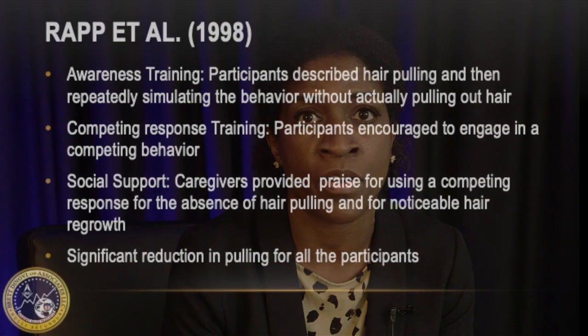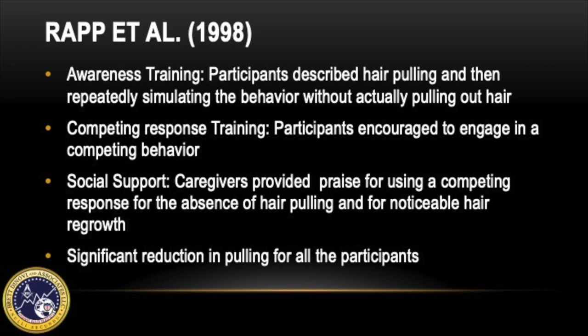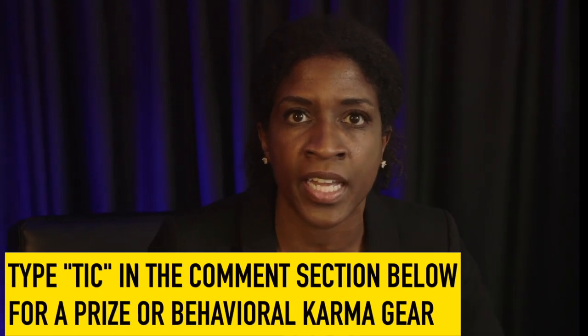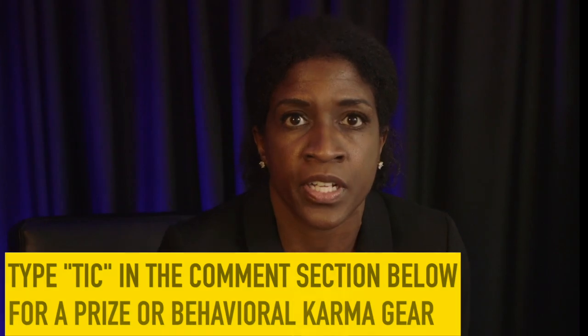In the Wrap et al. article, only three components of Habit Reversal Training were evaluated: awareness training, competing response training, and social support. During awareness training, the participant was taught to detect every instance of hair pulling, describing what it felt like between their fingers, and repeating and simulating the behavior without actually pulling hair. During competing response training, participants were encouraged to engage in a competing behavior such as folding their arms or sitting on their hands each time there was an urge to hair pull.